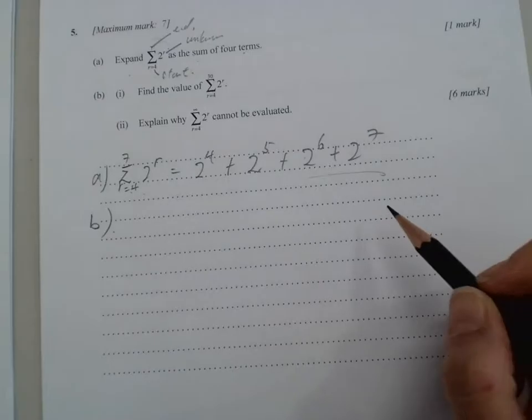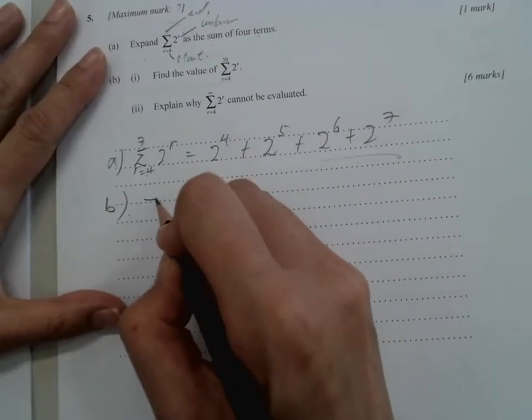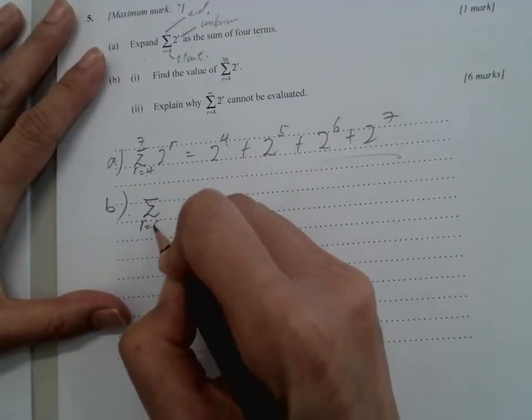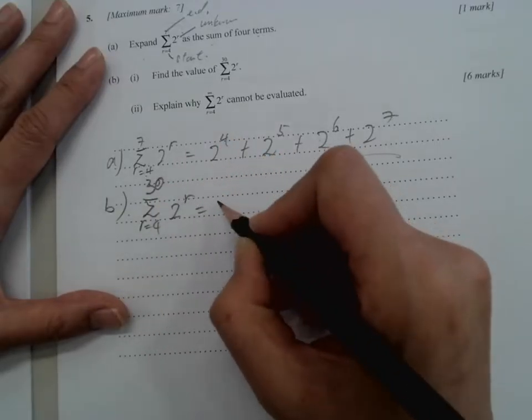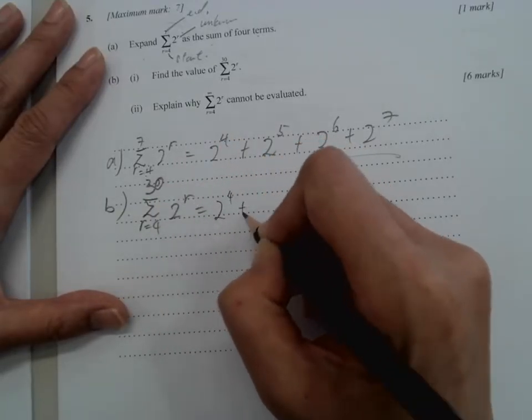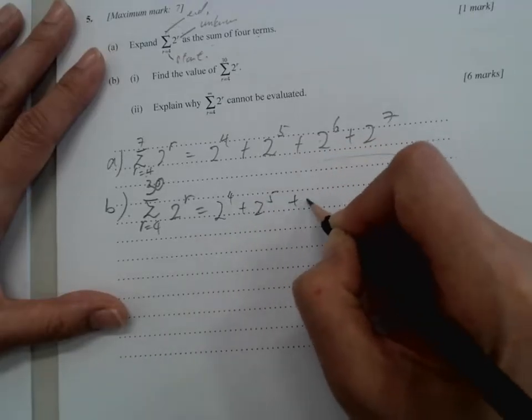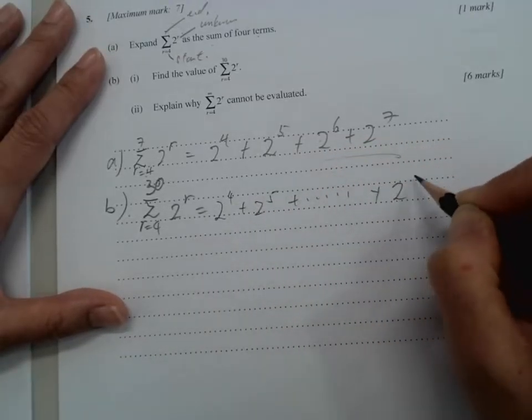All right, part b, the same thing, expand the value of it. So r equals 4, 30 this time, 2r. That will become, start with 2 to the power of 4 plus 2 to the power of 5 plus up to 2 to the power of 30.